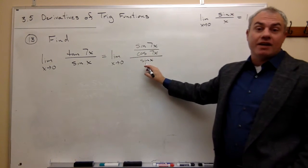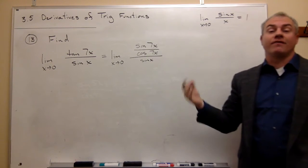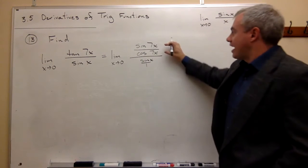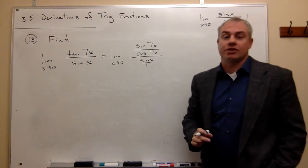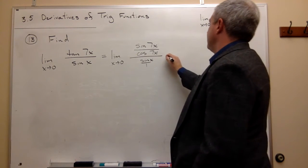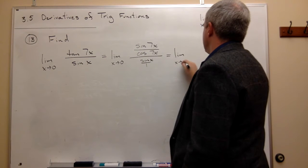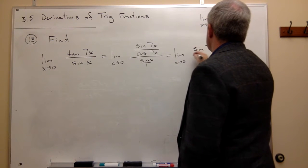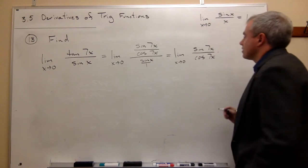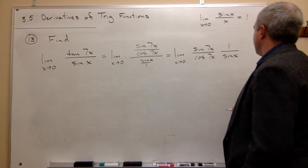If we have a sine of x on the bottom, that's just the same as having sine of x divided by one on the bottom. So we can write it over one, giving us a fraction divided by a fraction, and we can flip and multiply. So we rewrite this as the limit as x goes to zero of sine of 7x divided by cosine of 7x, times one over sine of x.